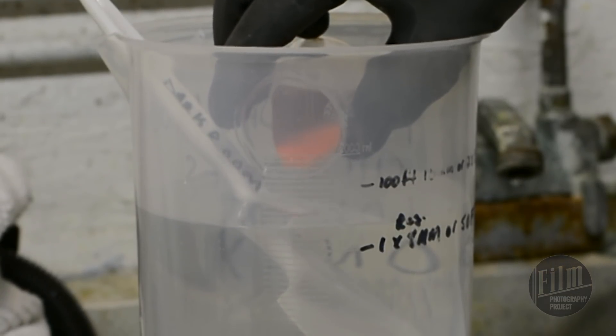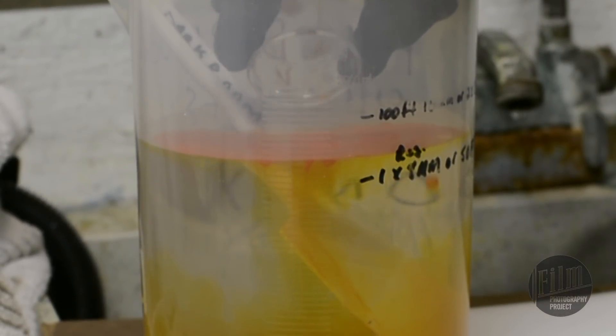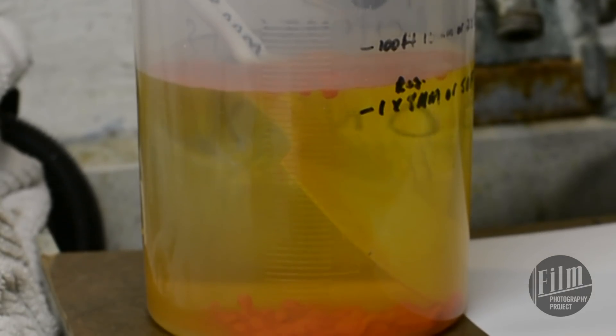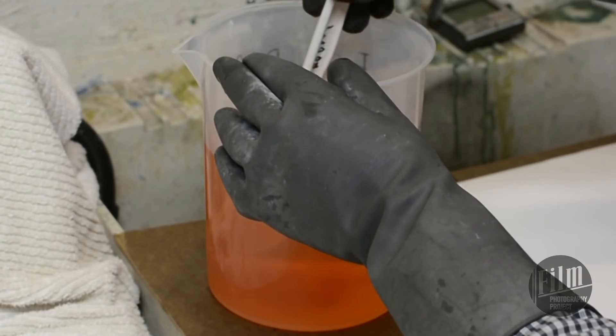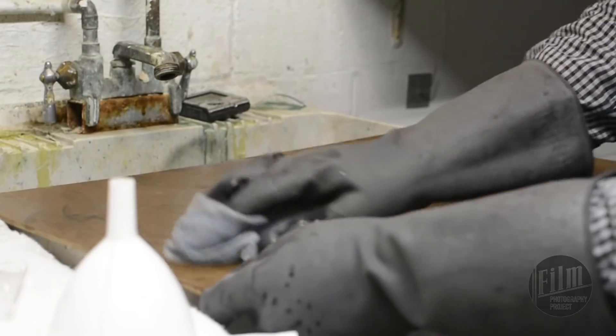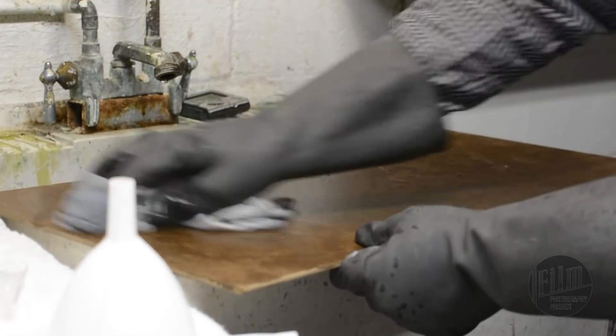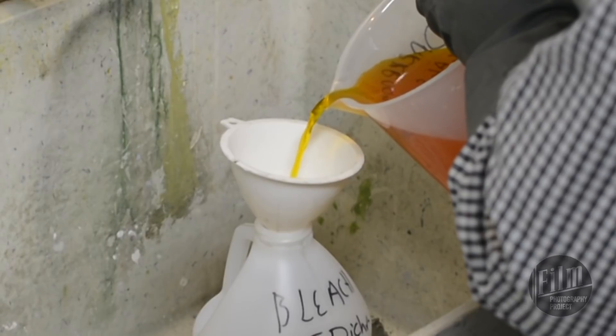Carefully add the dichromate to the water solution. Give it a gentle stir. Immediately clean up your scale and your work surface. Carefully pour the mixture into your jug.